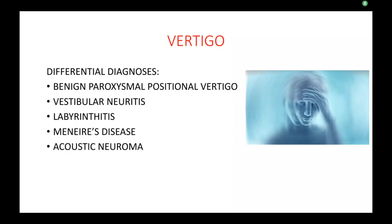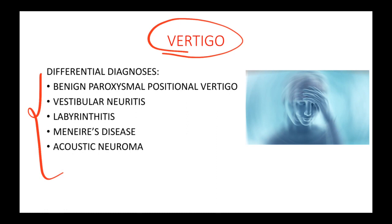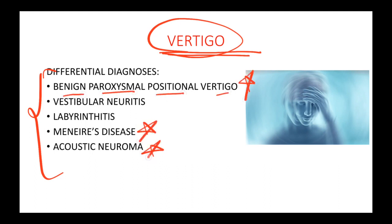In this video, let's talk about different causes of vertigo — the differential diagnoses when you see a patient come in with vertigo. Benign paroxysmal positional vertigo is the main one. Meniere's disease and acoustic neuroma are the main ones. Vestibular neuritis and labyrinthitis are very easy to understand and easy to remember.